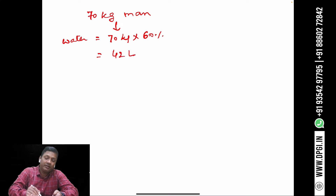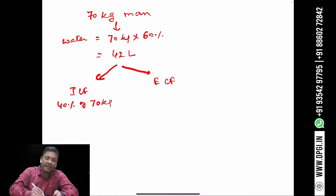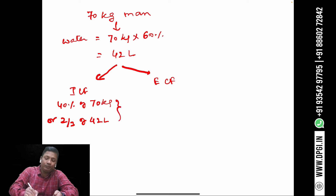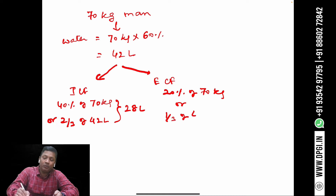This body water is divided into intracellular fluid and extracellular fluid. The intracellular fluid is 40% of 70 kg, or two-thirds of the total 42 liters — that is 28 liters. The extracellular fluid is 20% of 70 kg, or one-third of 42 liters — that is 14 liters.